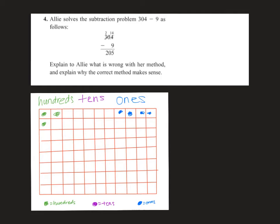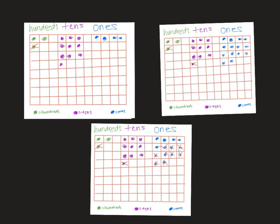Allie's problem is a subtraction problem: 304 minus 9. She believes that 304 minus 9 equals 205, which is incorrect. To represent 304, we have three markers in the hundreds spot, none in the tens spot, and four in the ones spot.